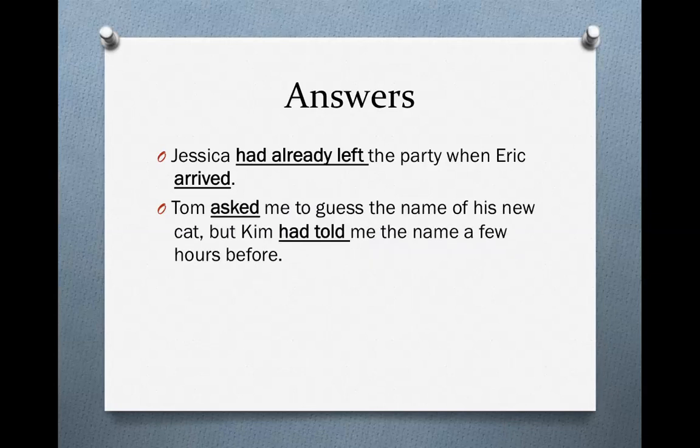Next sentence: Tom asked me to guess the name of his new cat, but Kim had told me the name a few hours before. We have two events in the past. One, Tom asked me to guess the name of his cat. Two, Kim told me the name before. Which event happened first? Obviously Kim telling me the name happened first because of the word before, so we use the past perfect — Kim had told me. And Tom's event happened second, so we use simple past — Tom asked me.